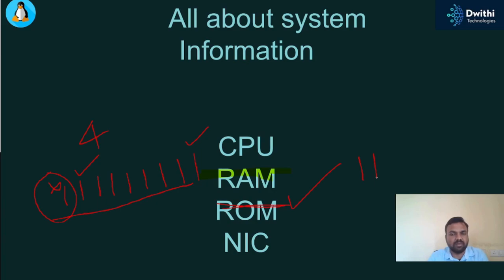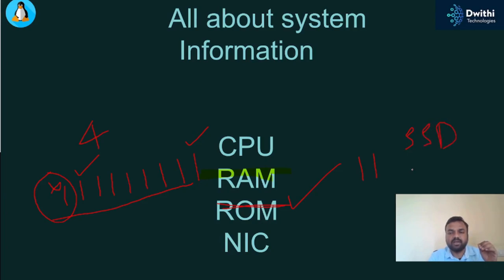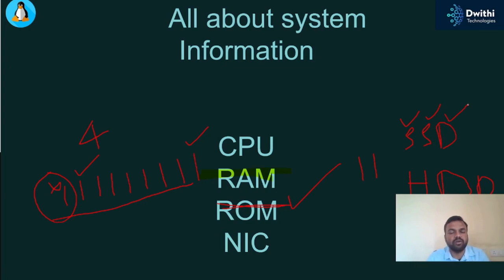Hard disk comes in different types. HDD — hard disk drive — will be of lower price, and a rotation happens inside your computer with a fan for cooling. SSD — solid state drive — will be of higher price, with magnets and other components inside. Read and write operations happen on your hard disk. Whenever you try to read any of your data, that is a read operation; and when you modify something, that is a write operation.